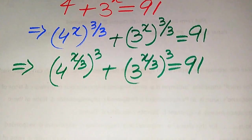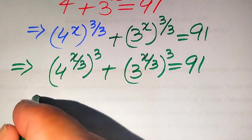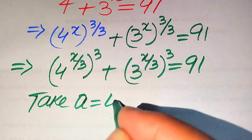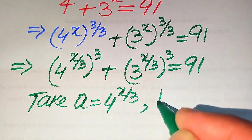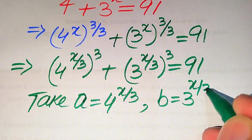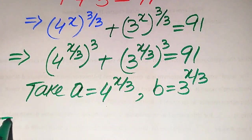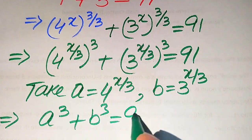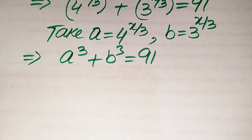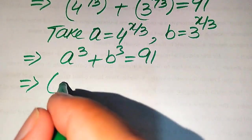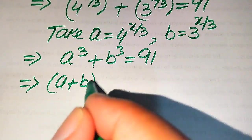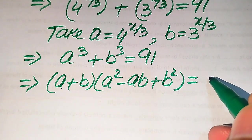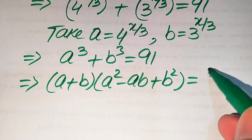Now we convert this exponential equation into cubic form. We let a equals 4 to the power of x over 3, and b equals 3 to the power of x over 3. When we put these two values into the above equation it becomes a cubed plus b cubed equals 91. We apply the cubic formula to the left hand side and it becomes (a + b)(a² - ab + b²) equals 91.